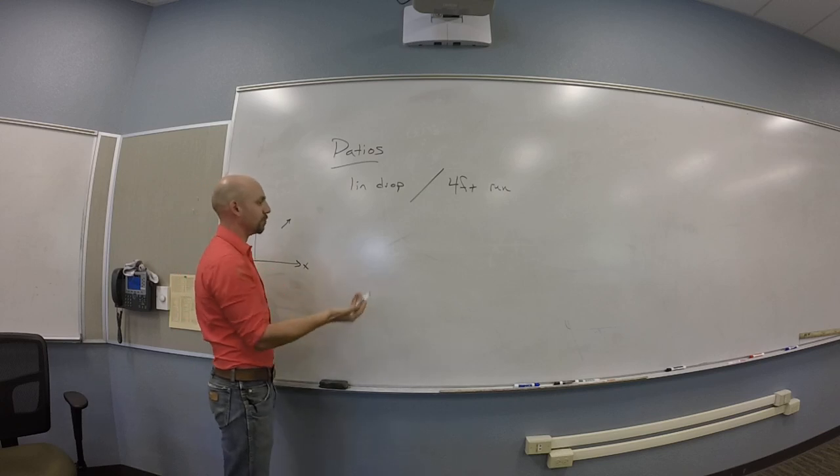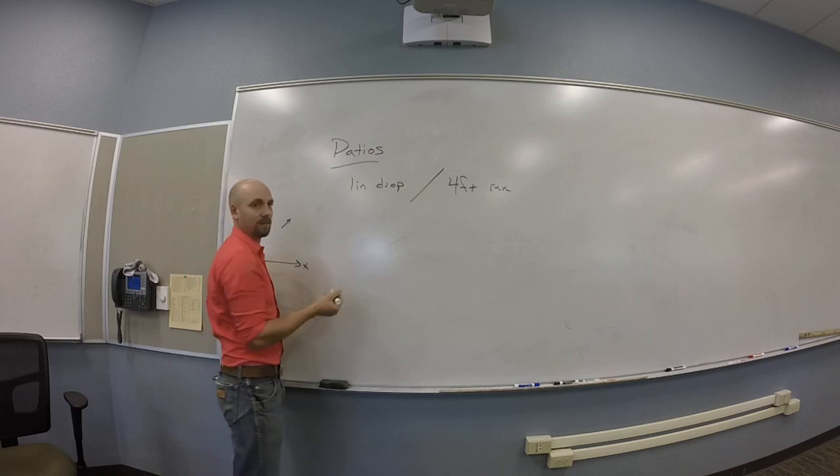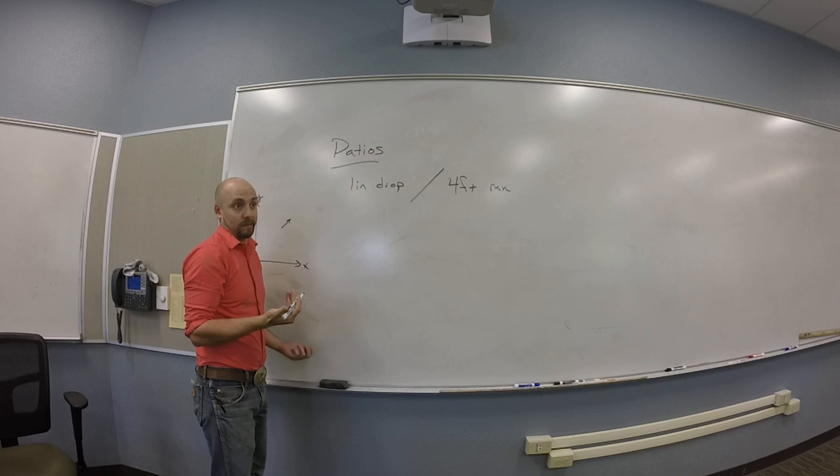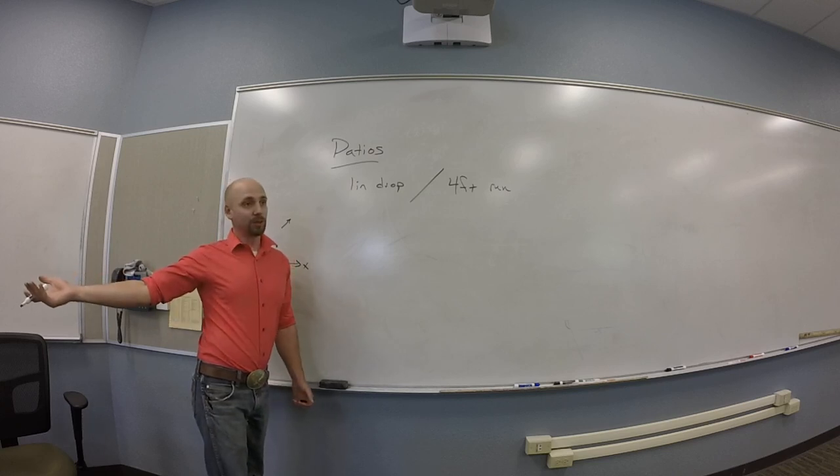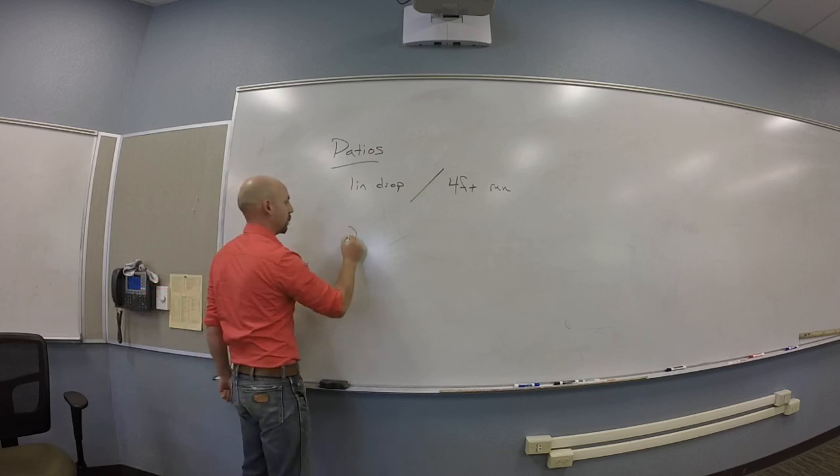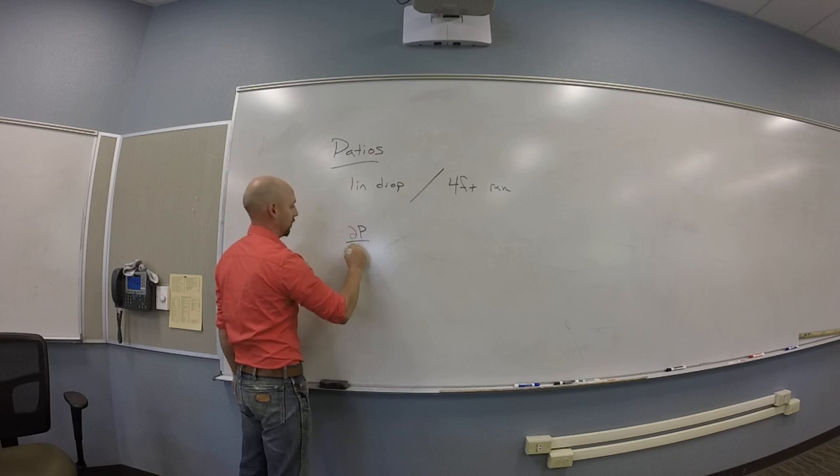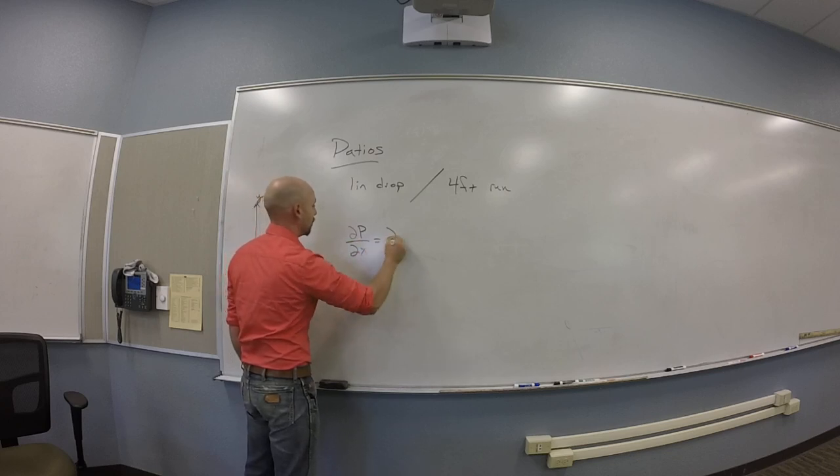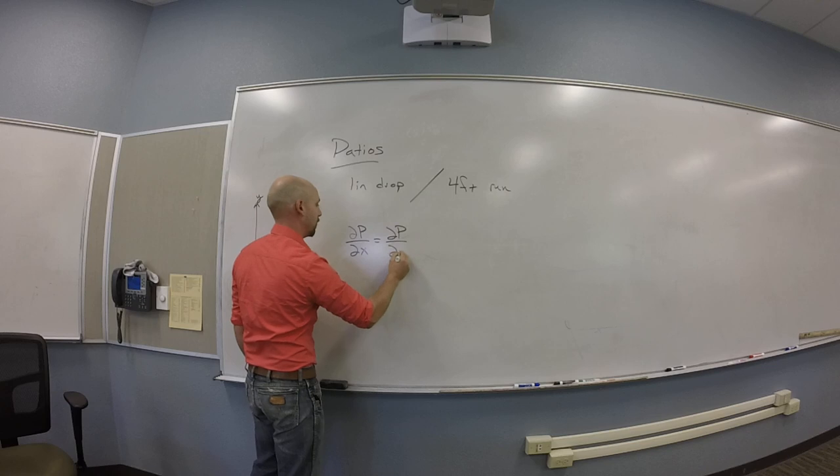So what does it mean for it to be sloped equally in the X and the Y? That the partial of X and the partial of Y are both the same. The partial with respect to X and the partial with respect to Y should be the same. I don't know what I'm going to call this function. I'm going to call it P for Patio.